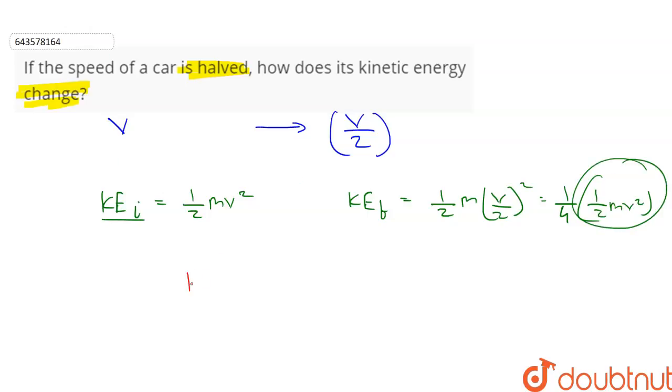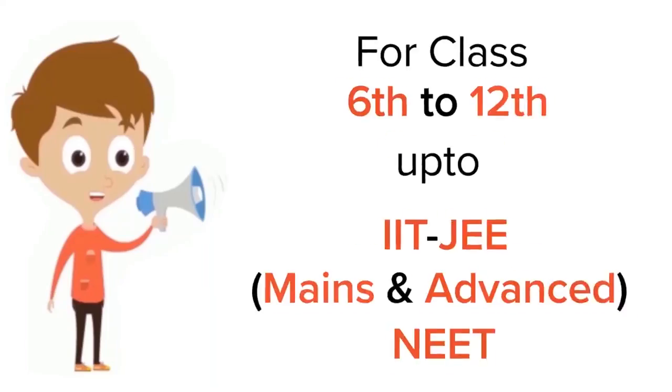Therefore, we can say that KEf is equal to one fourth of KEi. That means the kinetic energy becomes one fourth of the initial kinetic energy if the speed of the car is halved. This is our answer.